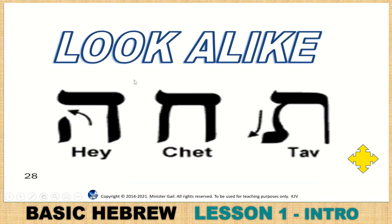These are look-alikes — here is your original today's Hebrew. He has an open H. Chet is your closed H — C-H-E-T. And Tav has a little foot on it. So here are the look-alikes: Tav, Chet — closed H — and He, which is the open H.